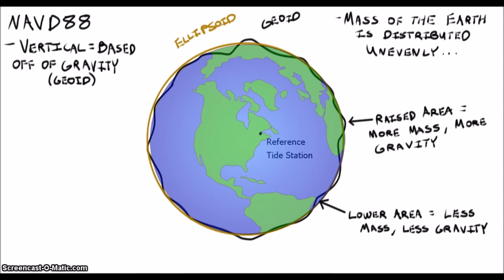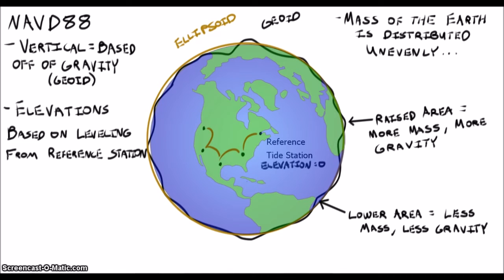The zero elevation for NAVD88 was set as the mean sea level at a tide station in Father Point in Quebec, Canada, and heights were transferred from this point to the rest of the U.S. by differential leveling. In this sense, NAVD88 is flat with respect to gravity. If two points have the same NAVD88 height, a ball would not roll between them. Another way to put this is to say that NAVD88 is a geoid, or a level equipotential surface.